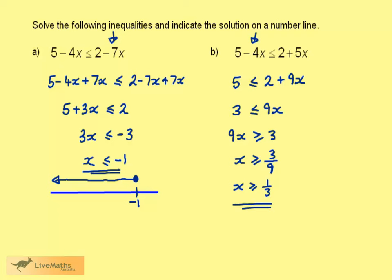We want to indicate this on a number line. Here we have 1 third, and greater than or equal to means a filled in circle and an arrow extending to the right.